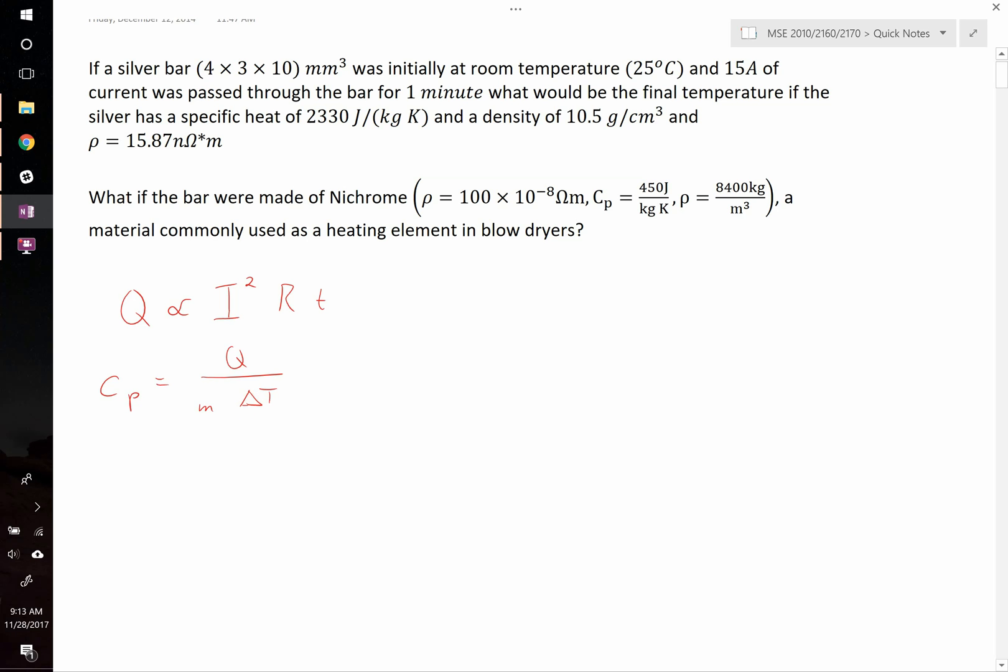So using these two expressions, we can solve this. The one thing we need though is that we're given a resistivity, and this is a resistance. So we need an expression to relate resistivity to resistance. We know that the total resistance is equal to the resistivity times its length divided by its cross sectional area.